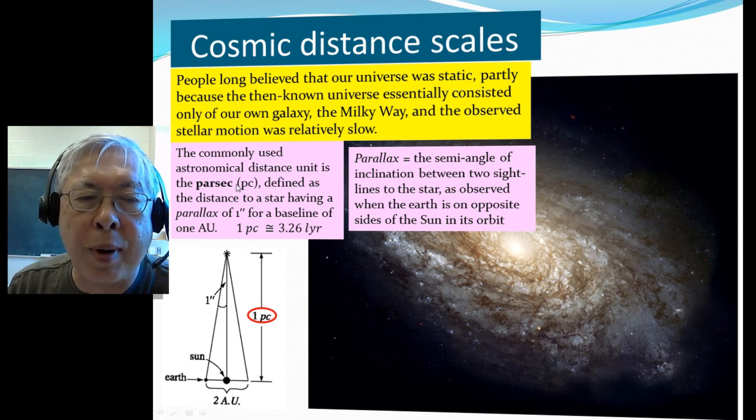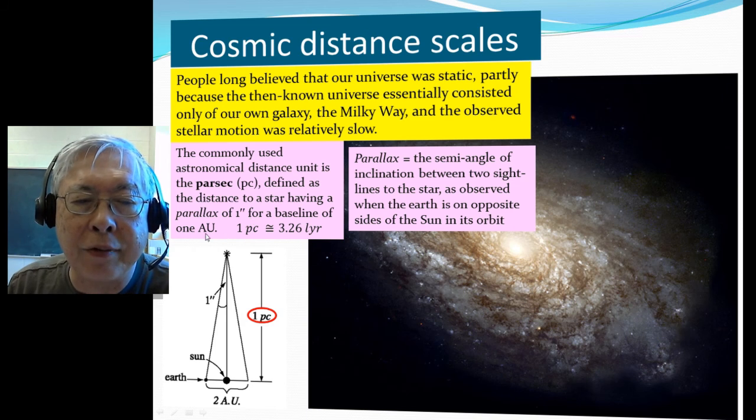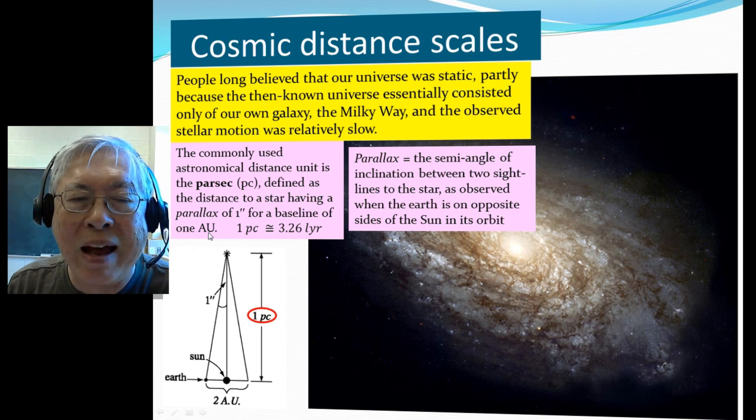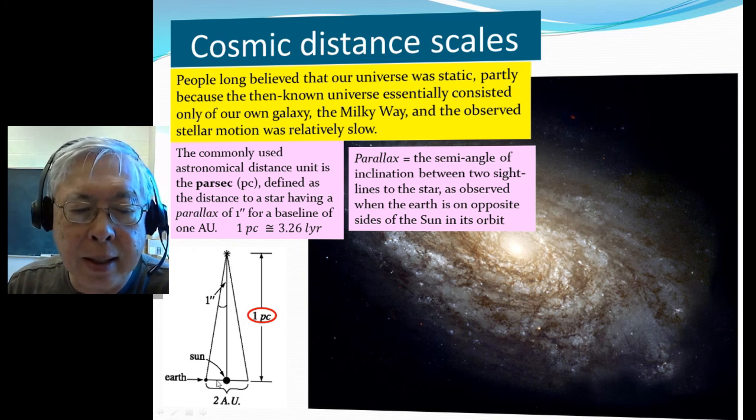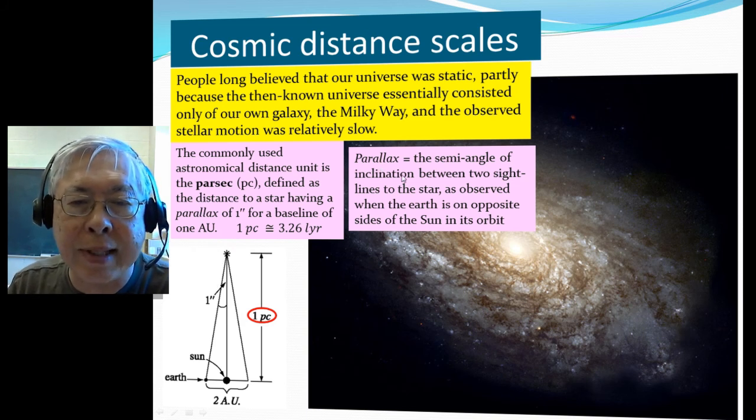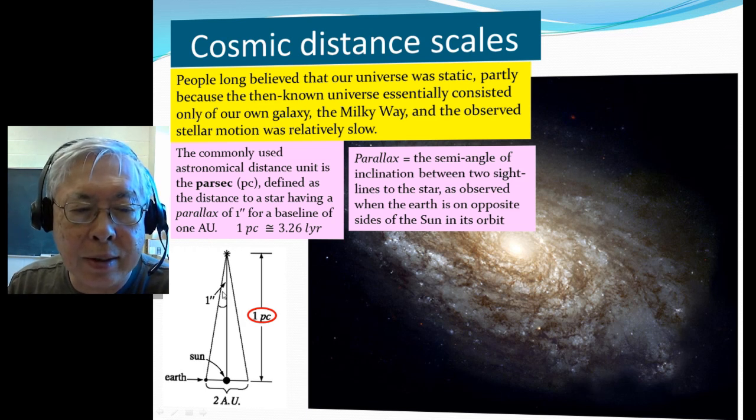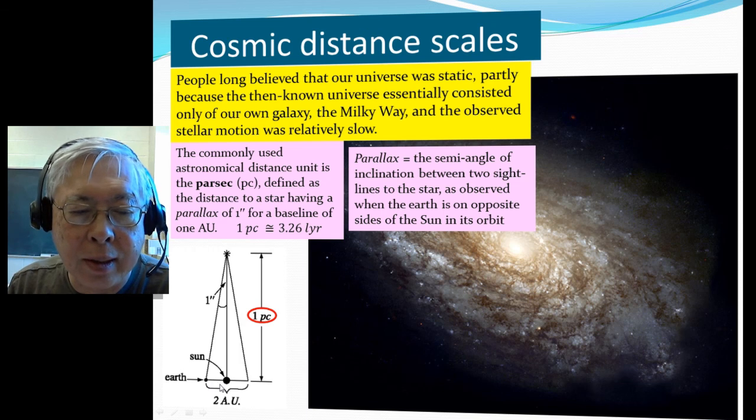The common astronomical distance unit is called parsec, defined as the distance of a star having a parallax of one arc second for a baseline of AU, which stands for Astronomical Unit, which is the average distance between Earth and the Sun. So here is the distance, and here is the Sun, and the Earth going around, so the radius is 1 AU. So if you look at the star from this angle, then half a year later to the other side, and the star will have a different inclination. And so this defines the parallax, which is the semi-angle of inclination between the sight lines of a star as observed from Earth on opposite sides of the Sun. So we define this distance to be parsec, if the parallax is one arc second and for a baseline of one AU.